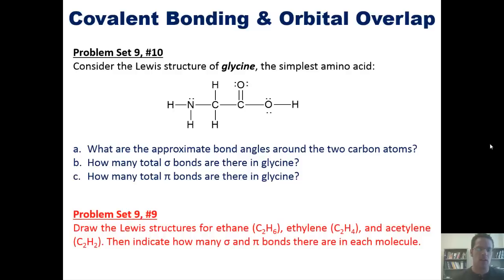Separately, I'd like you to consider this question. Draw the Lewis structures for ethane, ethylene, and acetylene, whose formulas are all given there. Then indicate how many sigma and pi bonds there are in each of those molecules.